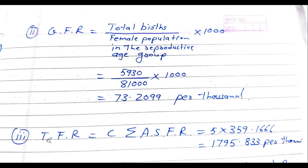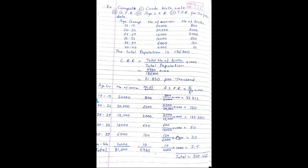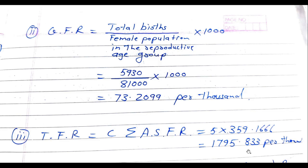TFR is calculated as C into summation ASFR. The class width of each age group is 5 years and summation ASFR is 359.1666. So TFR equals 5 into 359.1666 = 1795.833 per thousand.